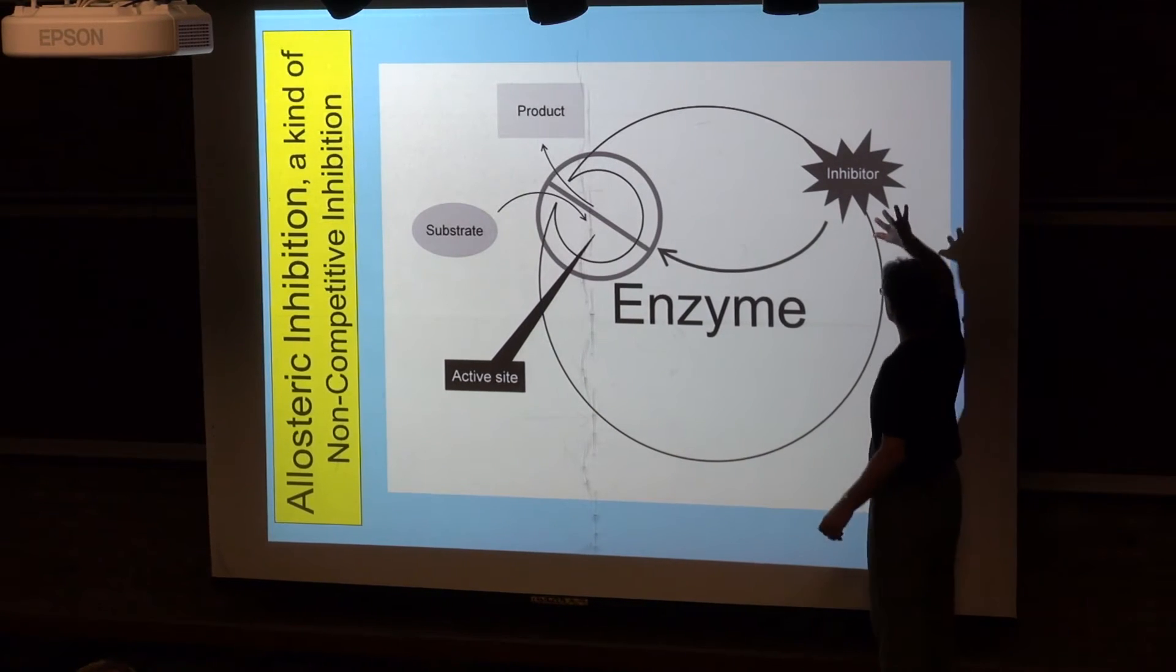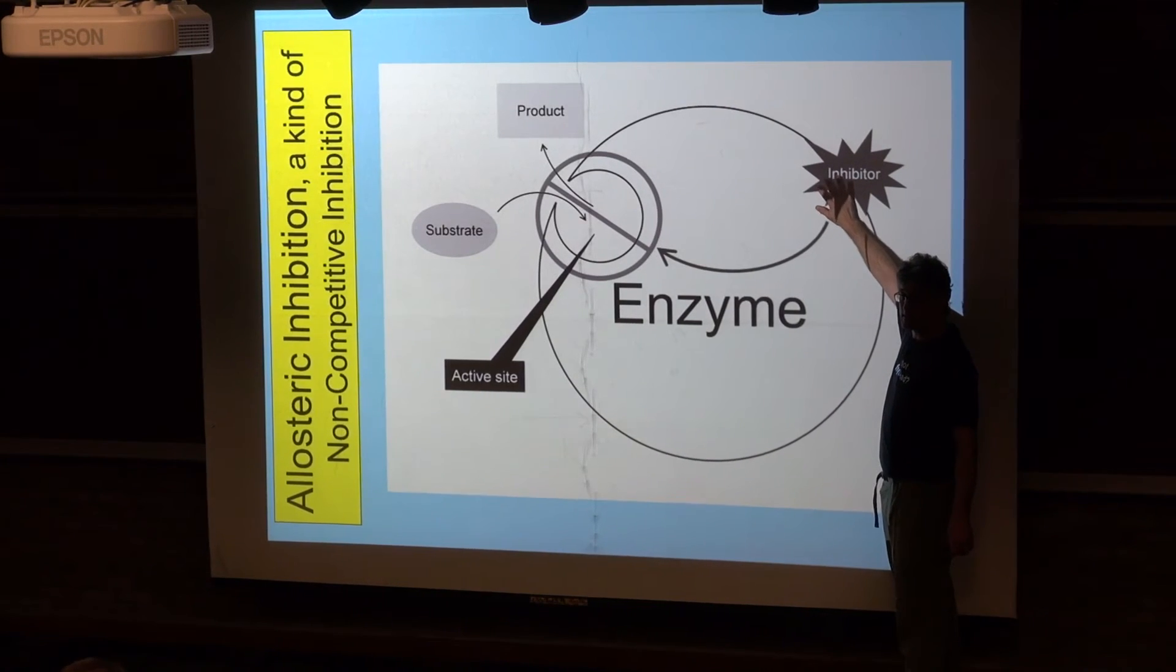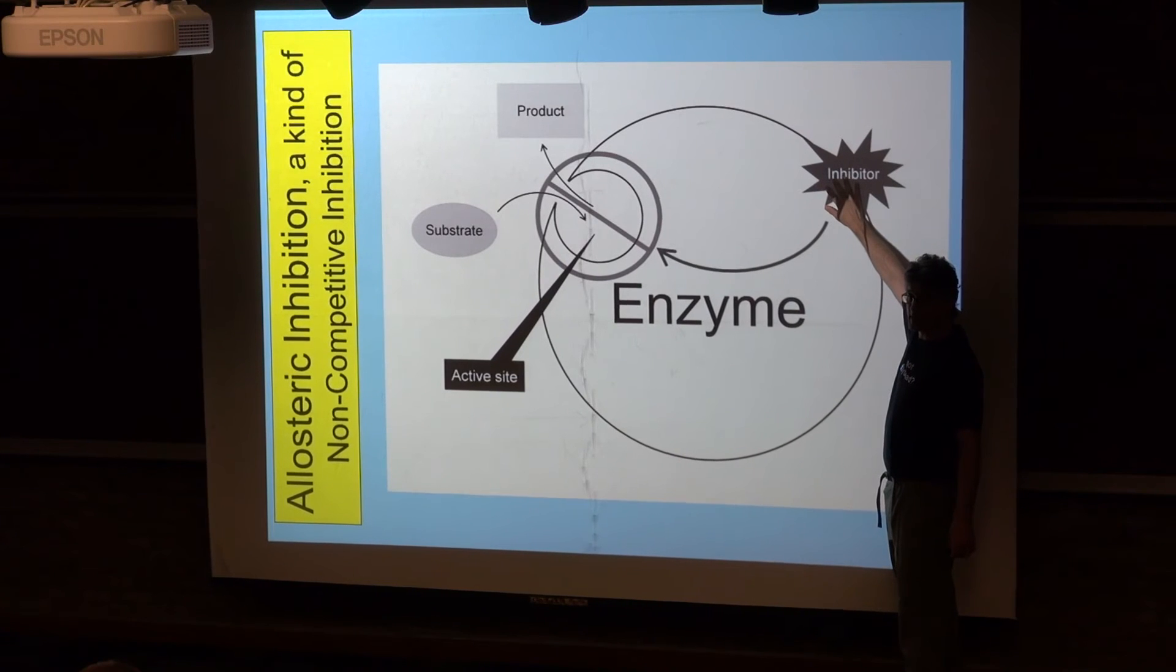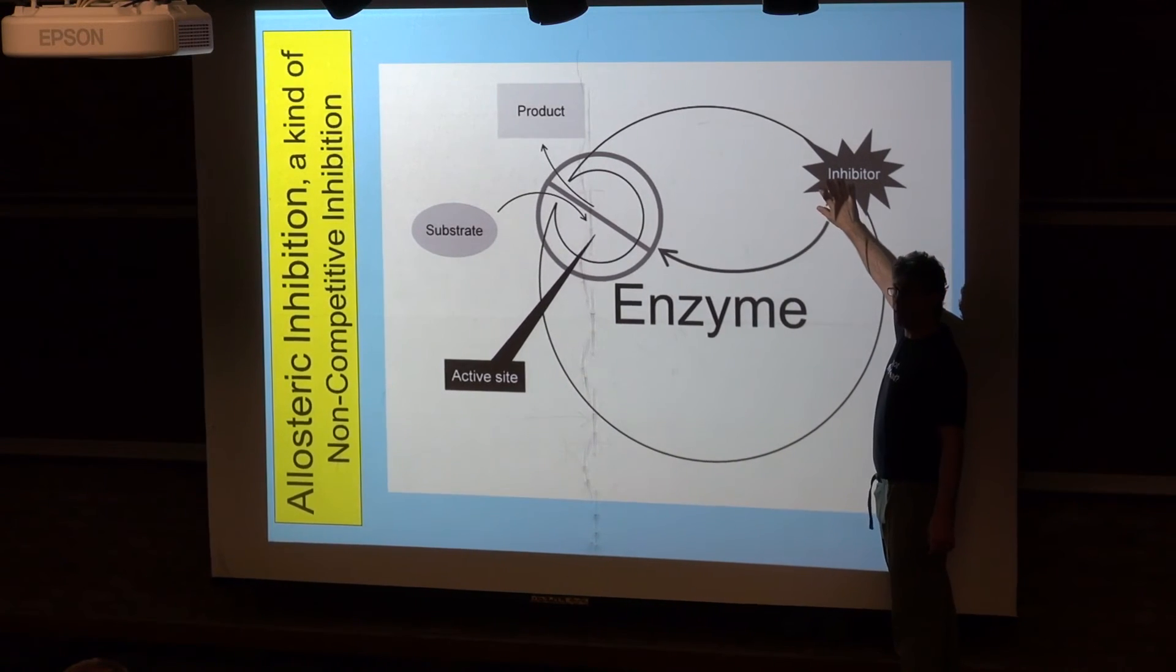Imagine there's, in a sense, an active site equivalent someplace else on the enzyme. It's very specific for the inhibitor. When that active site equivalent binds to a specific inhibitor molecule, that causes a change.